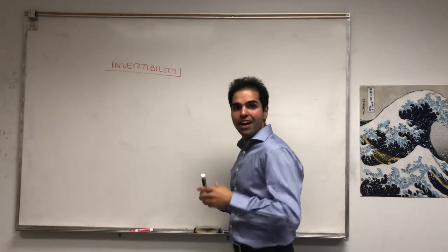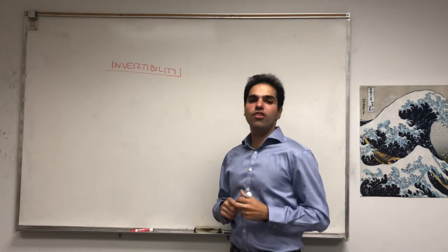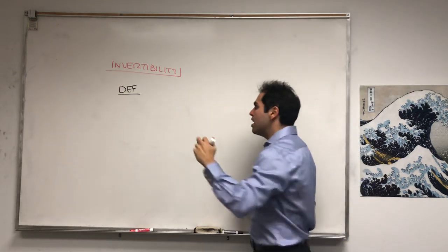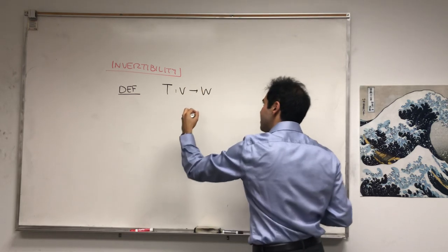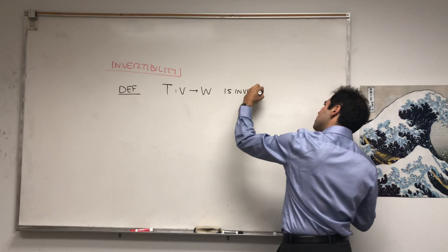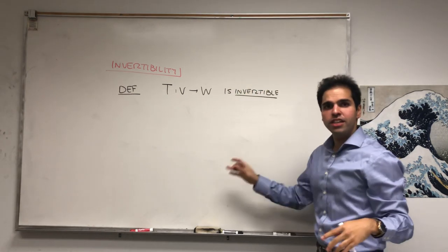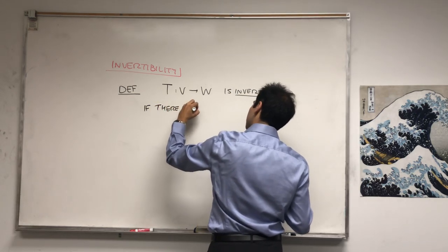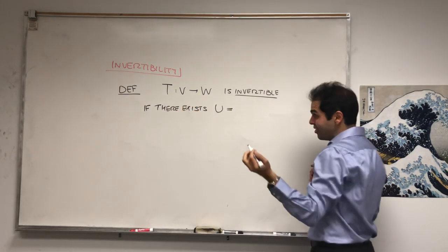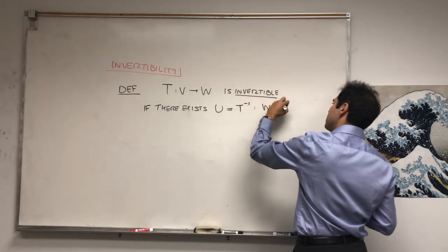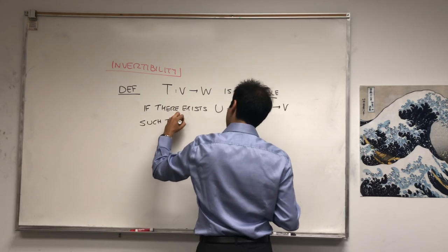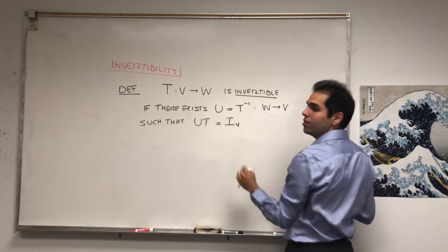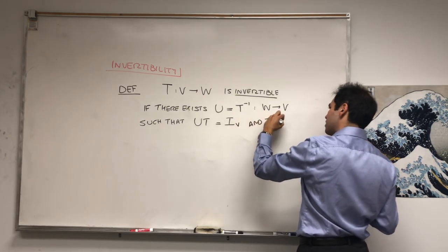Let me define invertibility of a linear transformation. Definition: if you have two vector spaces V and W, and T is a linear transformation between them, then T is invertible if there's a linear transformation that undoes whatever damage T does. That is, if there exists U — also known as T inverse — from W to V, such that UT is the identity on V and TU is the identity on W.